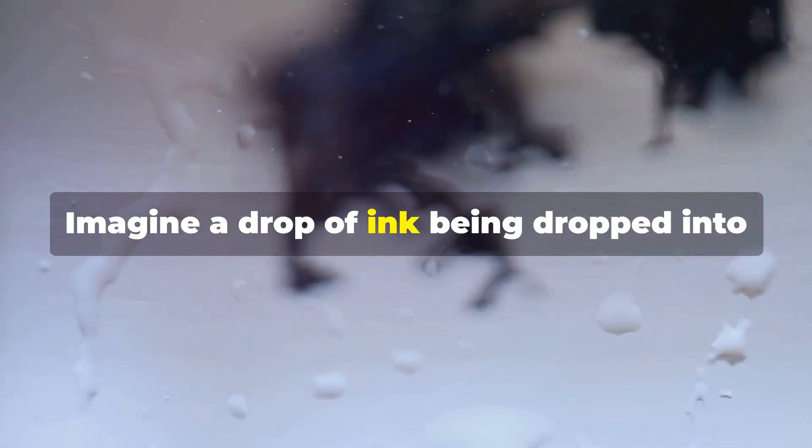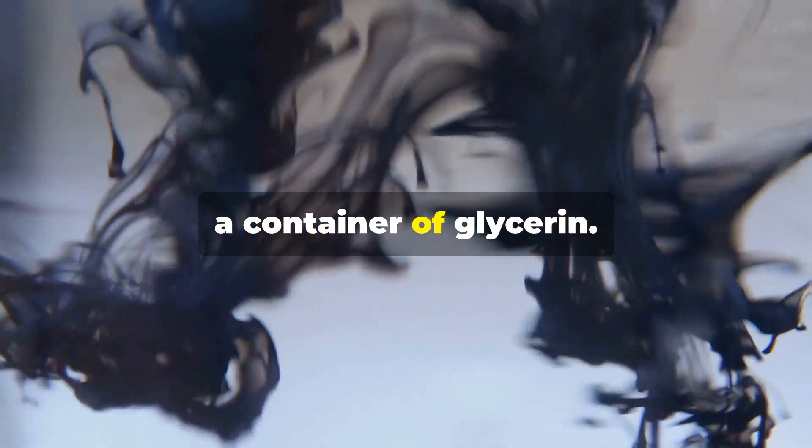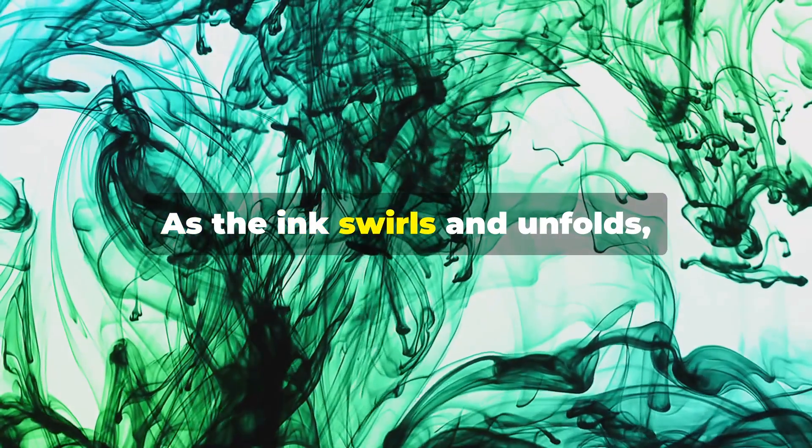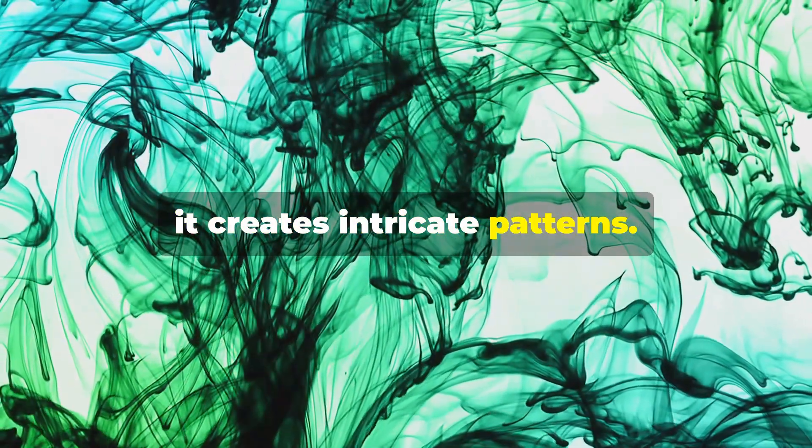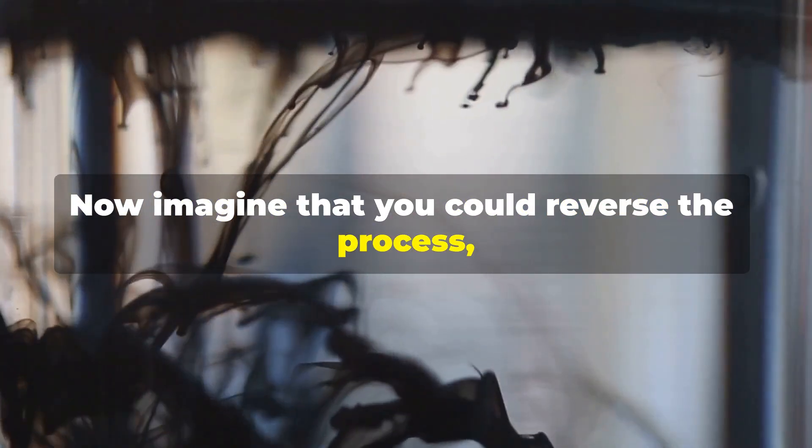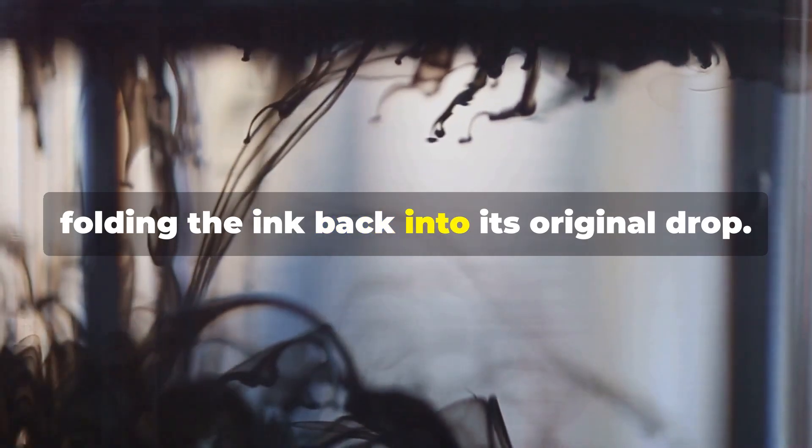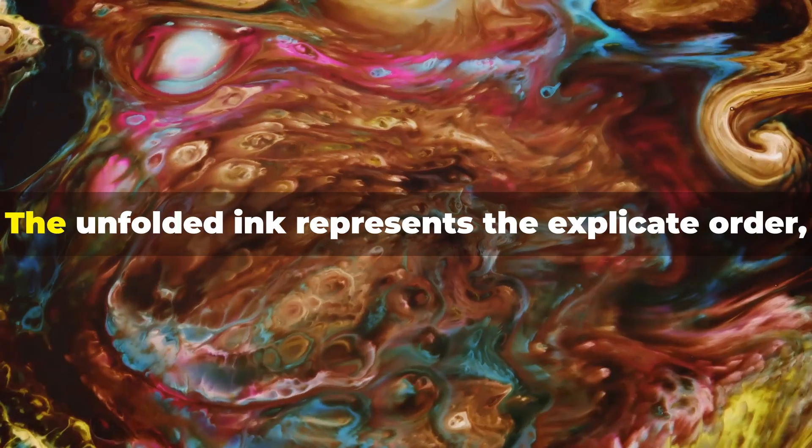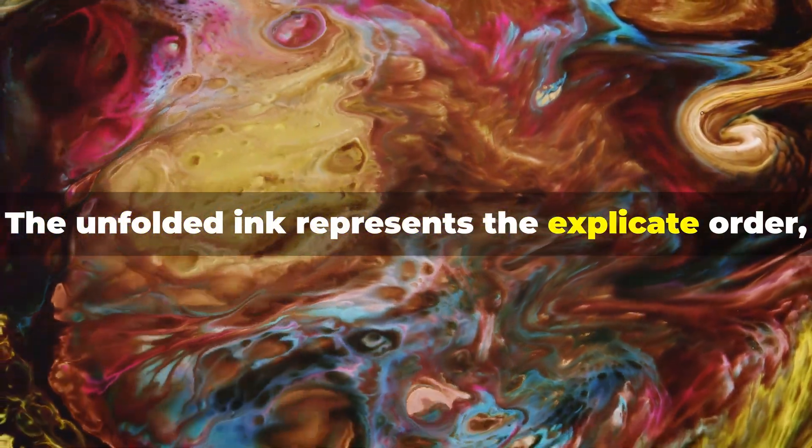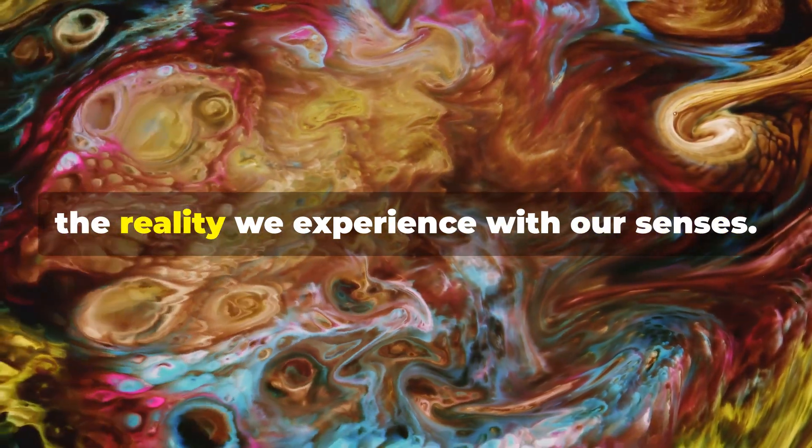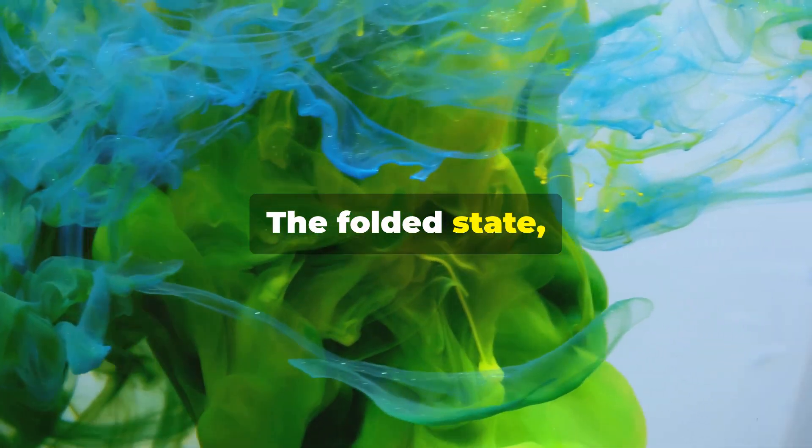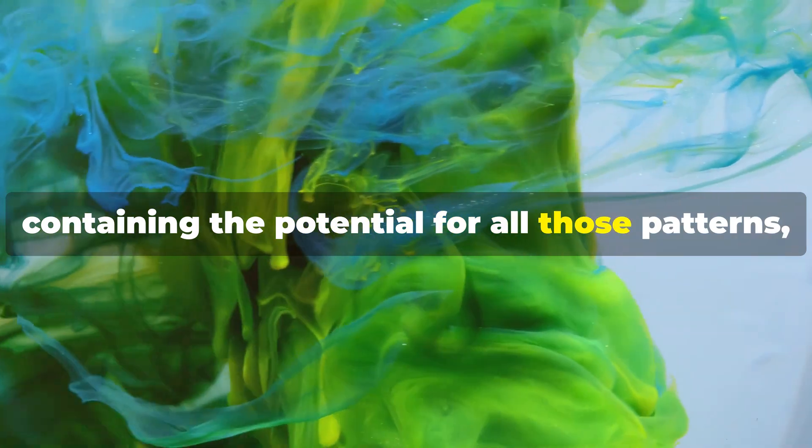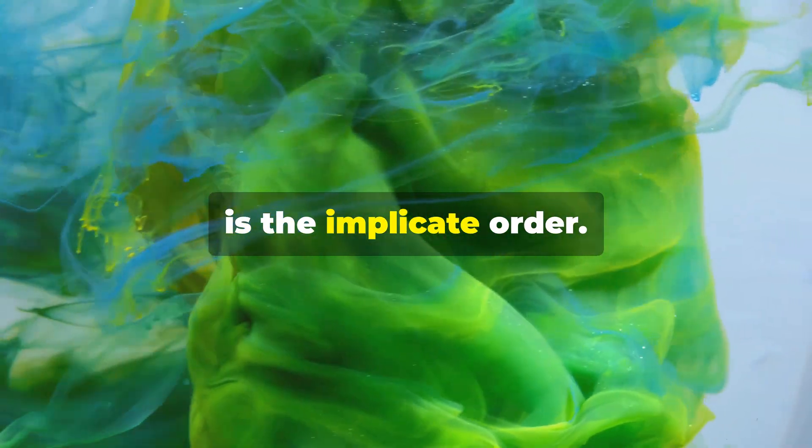Imagine a drop of ink being dropped into a container of glycerin. As the ink swirls and unfolds, it creates intricate patterns. Now imagine that you could reverse the process, folding the ink back into its original drop. The unfolded ink represents the explicate order, the reality we experience with our senses. The folded state, containing the potential for all those patterns, is the implicate order.